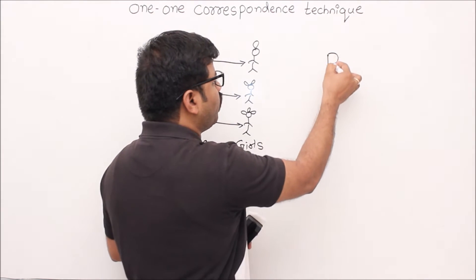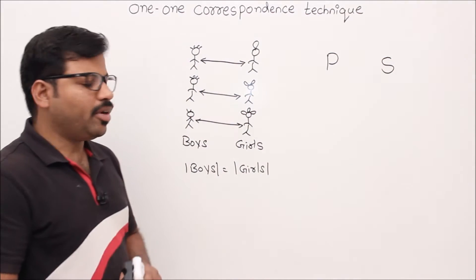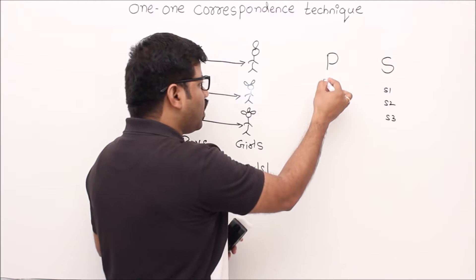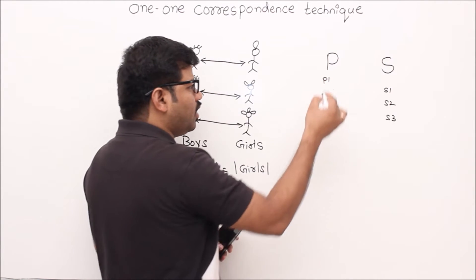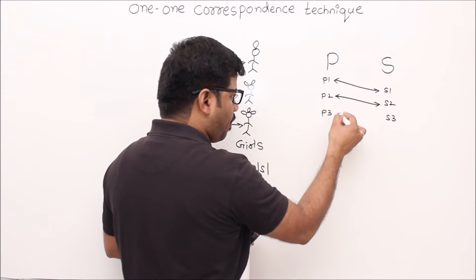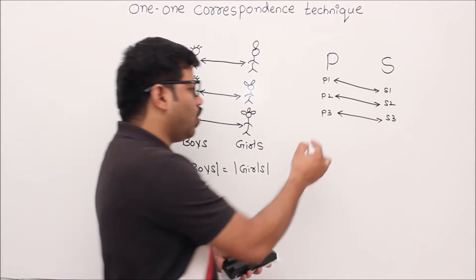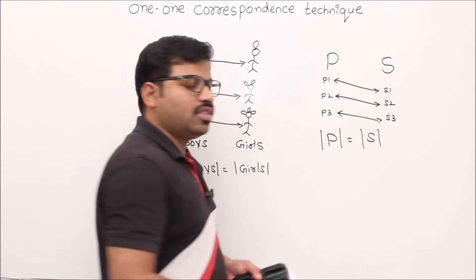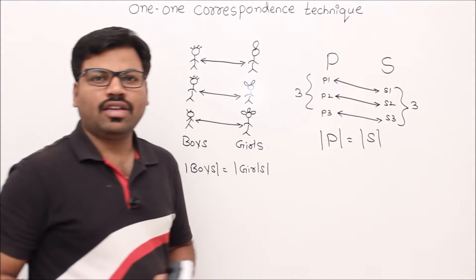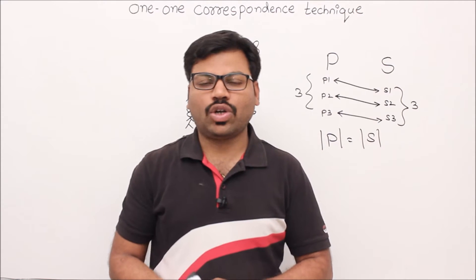The advantage of this is: let's say you have a problem P which is not solved yet, and there is another problem S which you know how to solve — you know its number of solutions S1, S2, S3. You don't know the number of solutions of problem P, but you know there is a one-to-one correspondence between the solutions of P and solutions of S. Then you can say the number of solutions of P also equals the number of solutions of S. Since you know this number, say 3, then P also has 3 solutions. This is called reducing one problem to another, and for that we use the one-to-one correspondence technique.